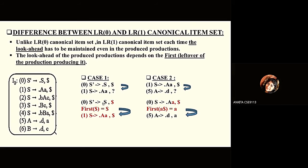What is the actual difference between LR0 and LR1 canonical item sets? We produce them in the same way, but in LR0 we do not have a look-ahead, whereas in LR1 we must maintain the look-ahead in each and every production. The look-ahead of produced productions depends on the First of the remaining part of the producing production. For S-hash with dot-S and dollar, the dollar is included from augmentation because in bottom-up parsing the stack initially has dollar. So production 1 gets look-ahead dollar.